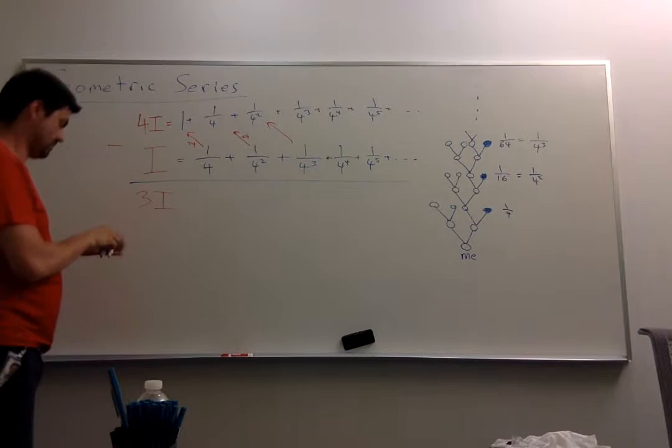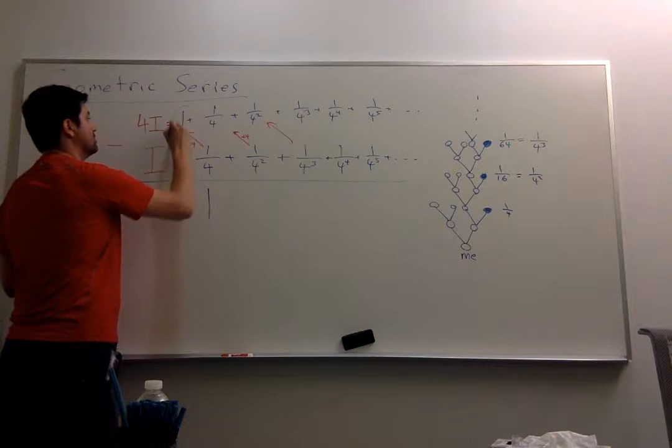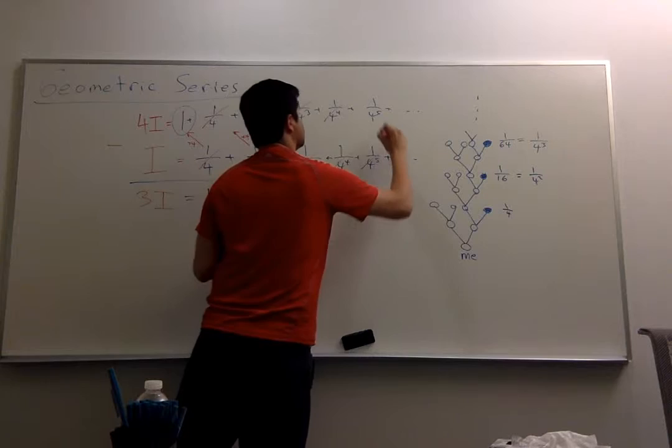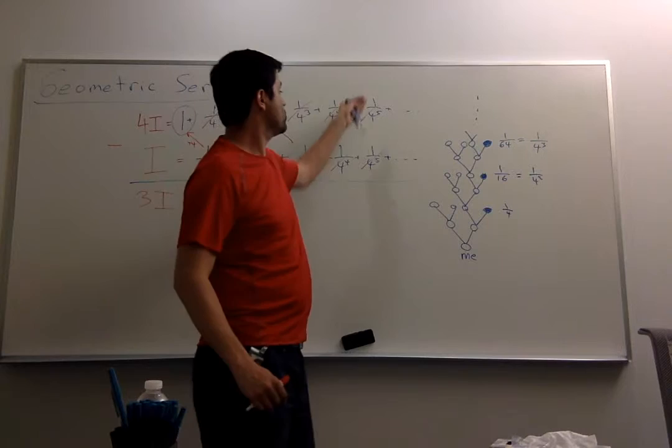And on the right, well, we have this 1. This 1 quarter cancels with this 1 quarter. The 1 quarter squared cancels with this 1 quarter squared. And everything happens to cancel. Because if there's infinitely many terms on the bottom, there's also infinitely many terms on the top. And there's 1 for each one here.